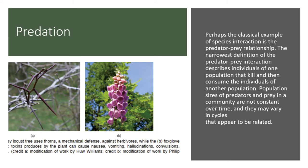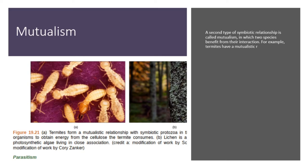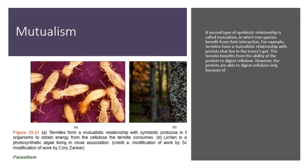A second type of symbiotic relationship is called mutualism, in which two species benefit from their interaction. For example, termites have a mutualistic relationship with protists that live in the insect's gut. The termite benefits from the ability of the protists to digest cellulose. However, the protists are able to digest cellulose only because of the presence of symbiotic bacteria within their cells that produce the cellulose enzyme.